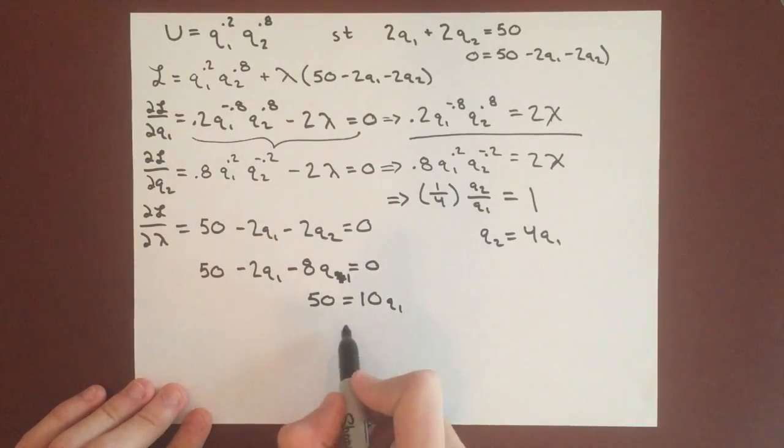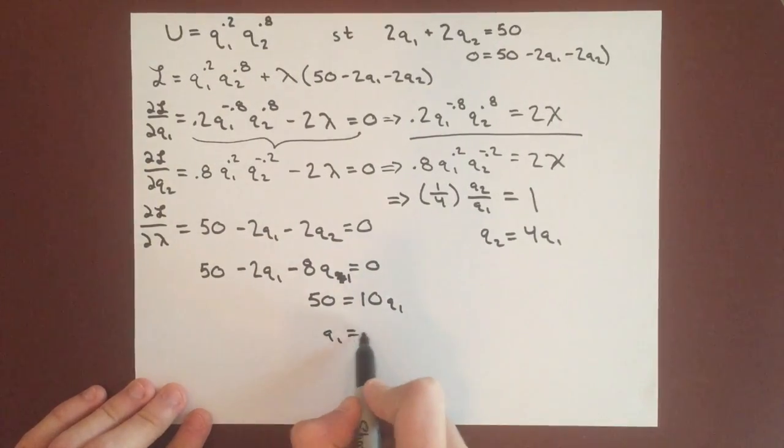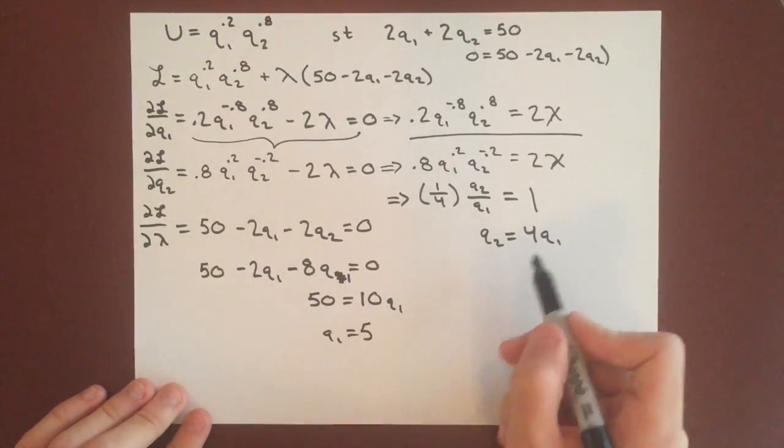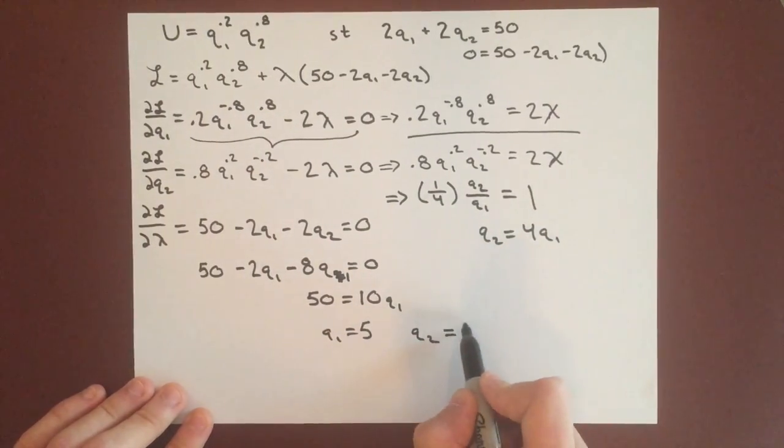And so we get q1 equals 5, and q2 equals 4q1, so q2 will equal 20.